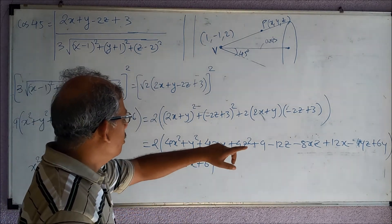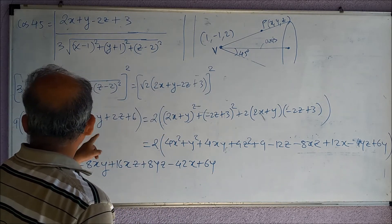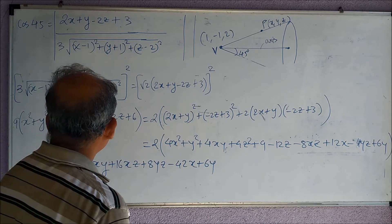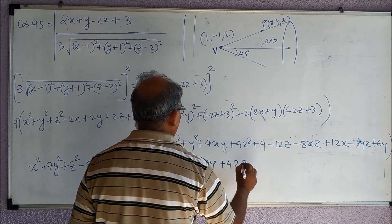And then z, so -24, when it comes to this side it will be +24 + 18, so it is again +42z, right?